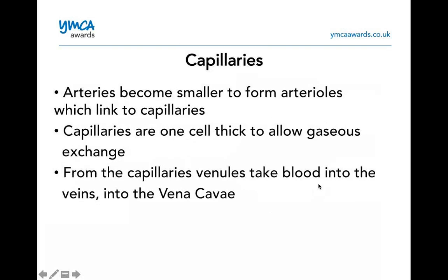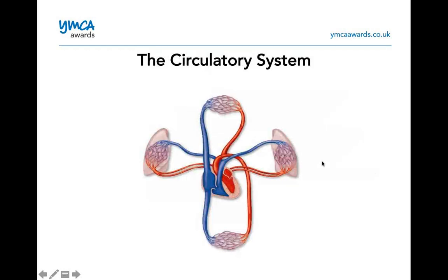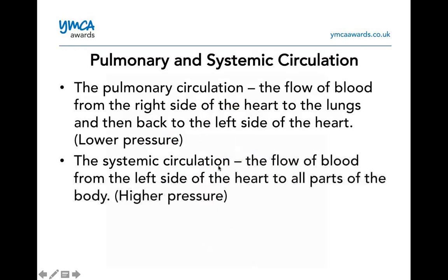We also have capillaries. Arteries become smaller to form arterioles, which link to capillaries. Capillaries are one cell thick and allow gaseous exchange. From the capillaries, venules take blood into the veins, into the vena cava. The diagram gives you an idea of circulation from the left to the right side of the body — showing how blood goes from being oxygenated, then comes back deoxygenated, and the cycle continues.